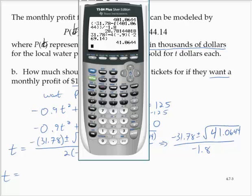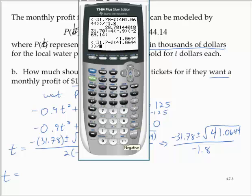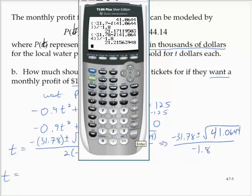So then we would have (-31.78 - √41.0644) / -1.8, which gives 21.17. And I missed the 8 there, it's 31.78. Got to be careful here. Let's change that minus to a plus.